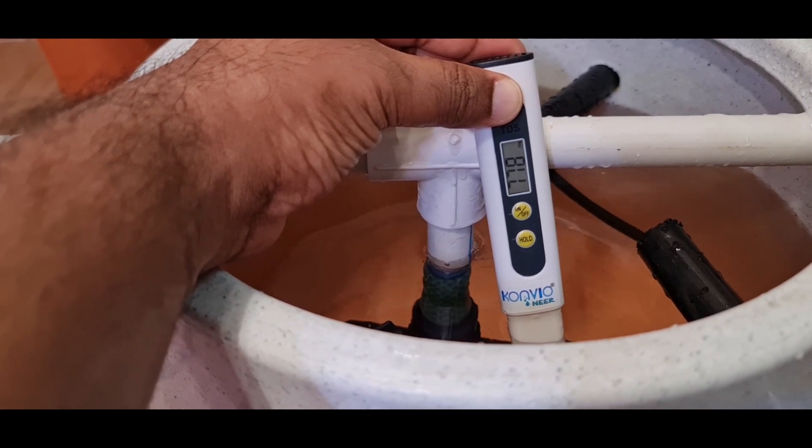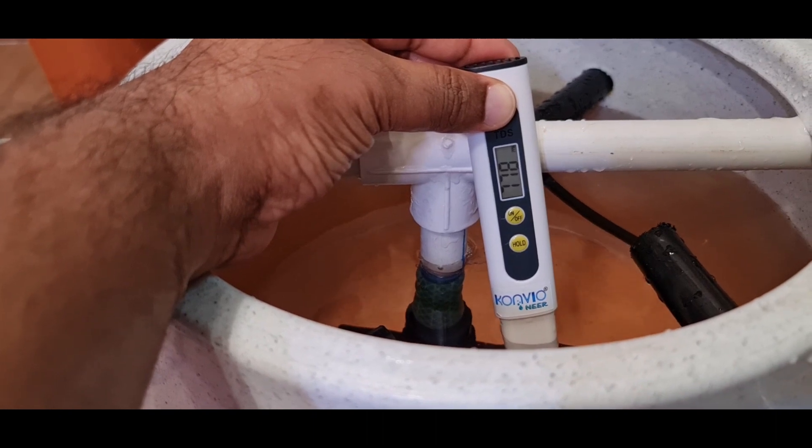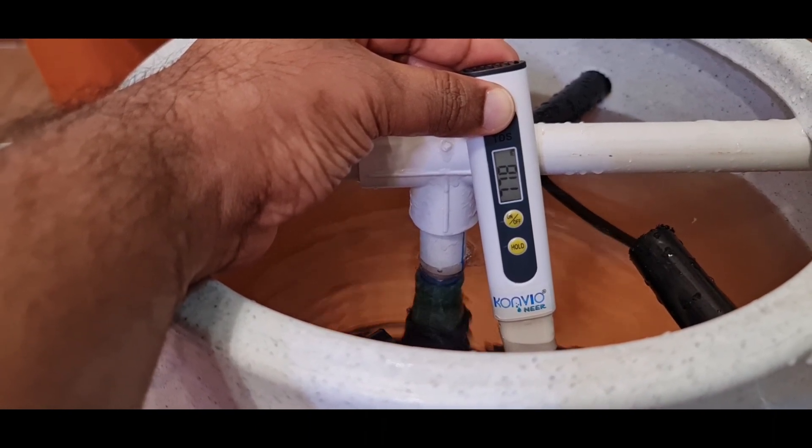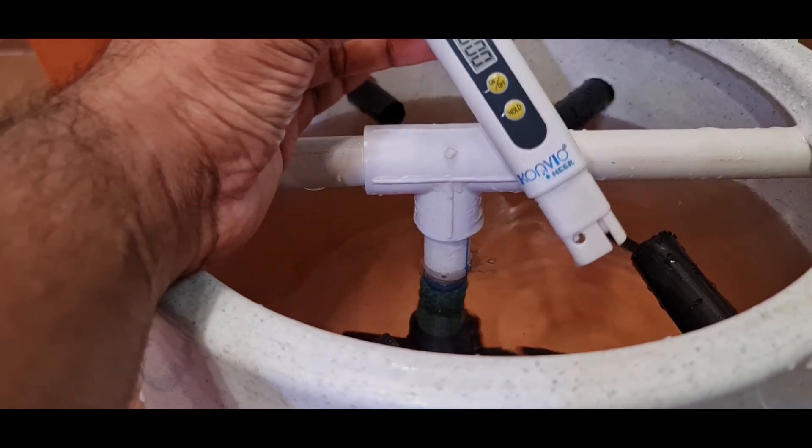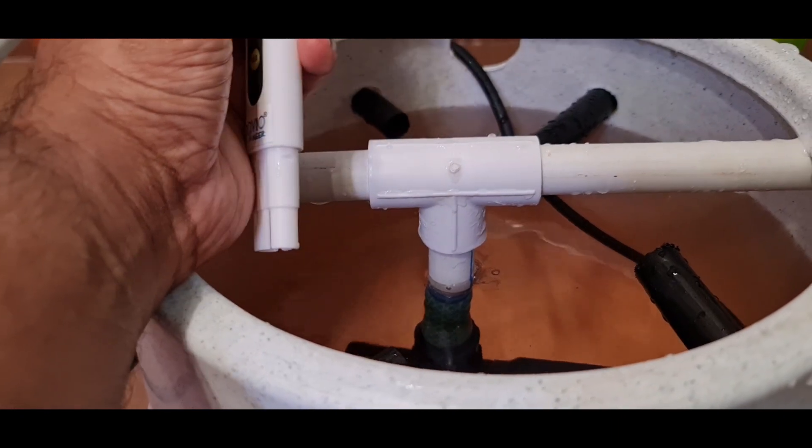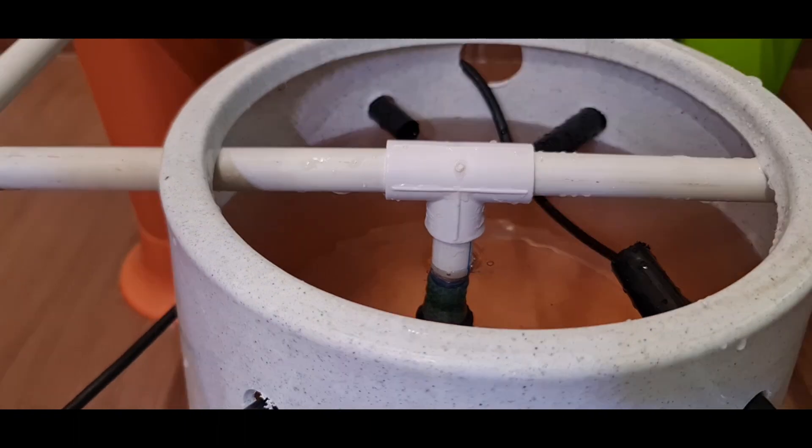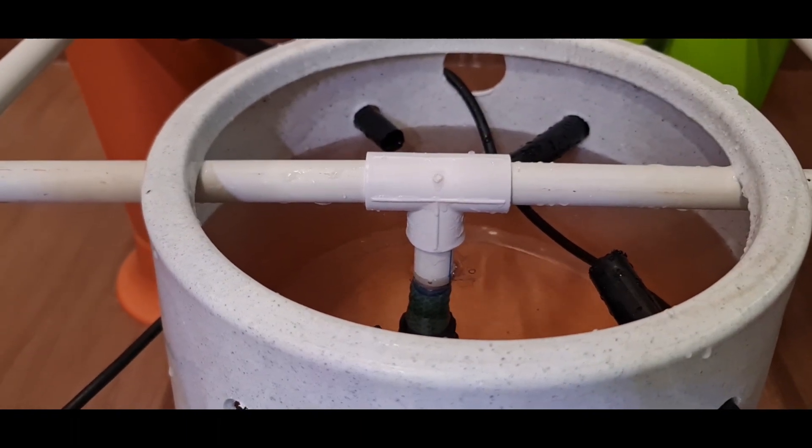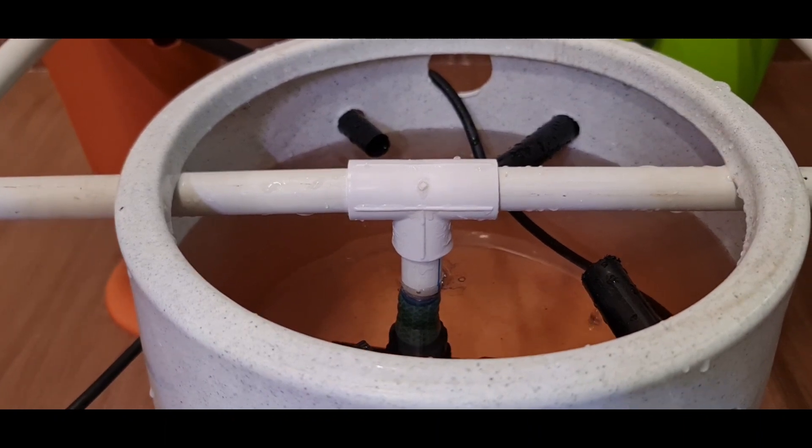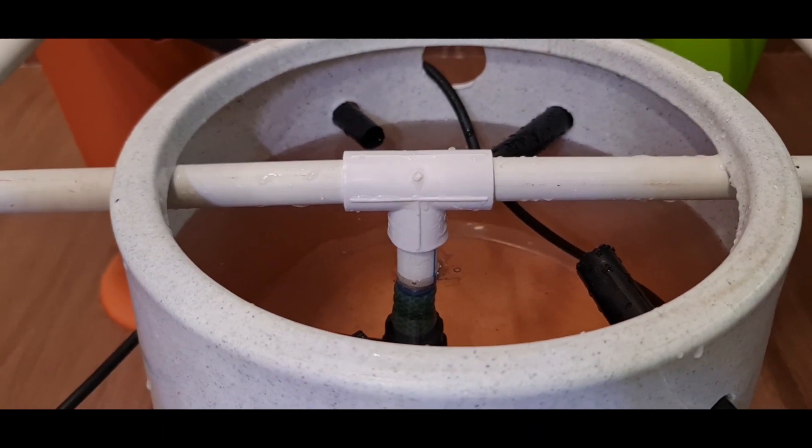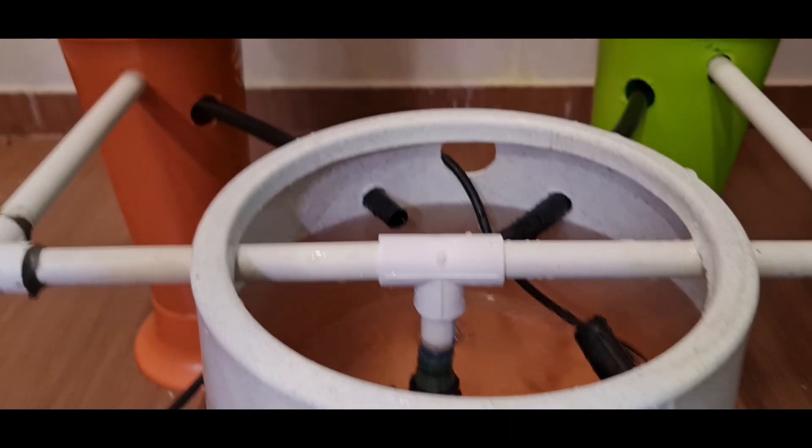I have added 75 ml of the nutrient solution stock A and B. Now, the TDS is showing nearly 800. That is fine. This is half strength of the nutrient solution. Our target TDS is 1200 to 1500. After 2 to 3 weeks, gradually we add more and more nutrient to this solution and slowly the TDS will rise. It is recommended to start with half strength of the nutrient solution.